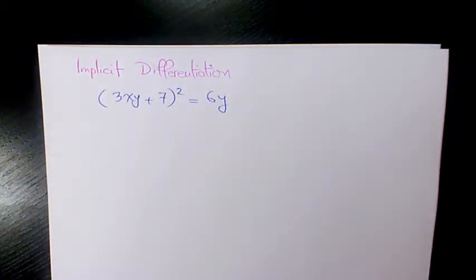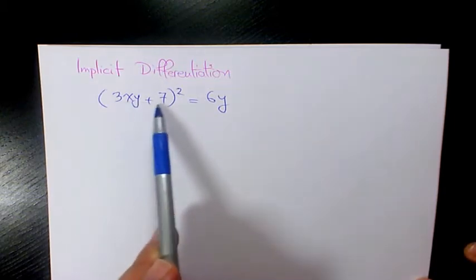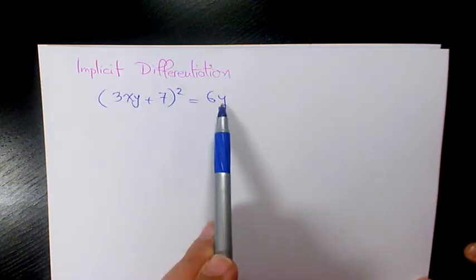What's up guys, this is Massey. Welcome to another video. In this video I want to show you how to find out the derivative of 3xy plus 7 to the power of 2 equals to 6y.